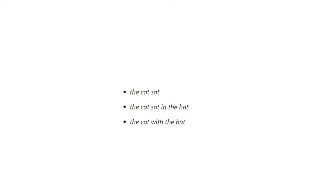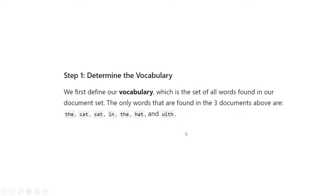So what is the Bag of Words? The concept is that, for example, we have three different documents. In the first document the sentence is 'the cat sat inside', the second document is 'the cat sat in the hat', and the third document is 'the cat with the hat'. For step one, we determine the vocabulary — we first define all unique words occurring in these three documents: the, cat, sat, in, hat, and with.